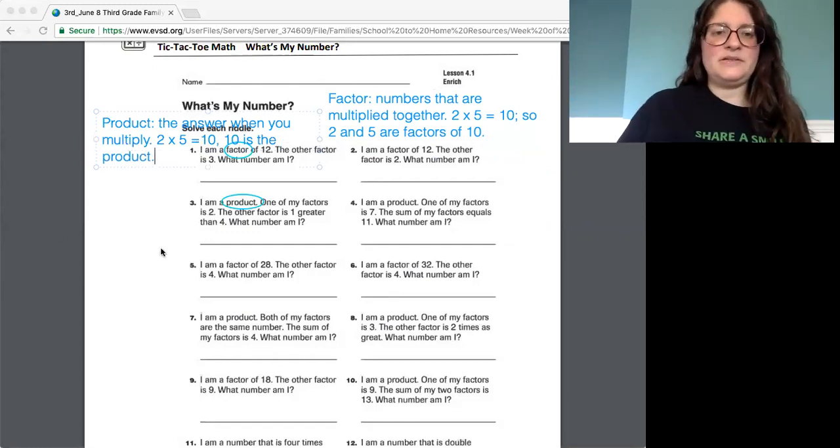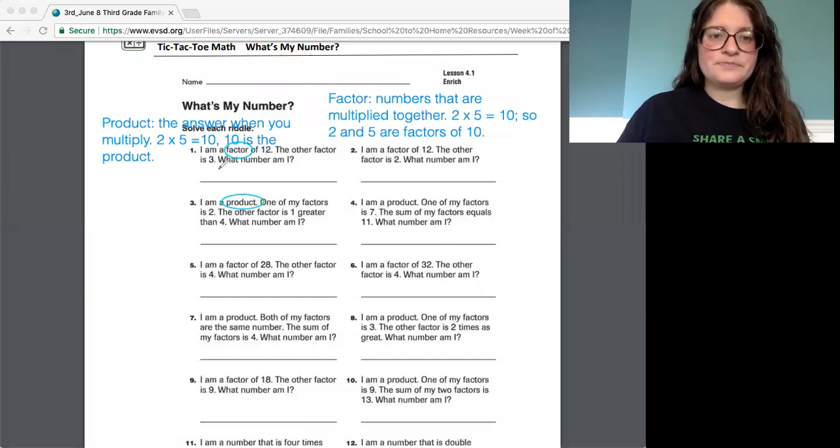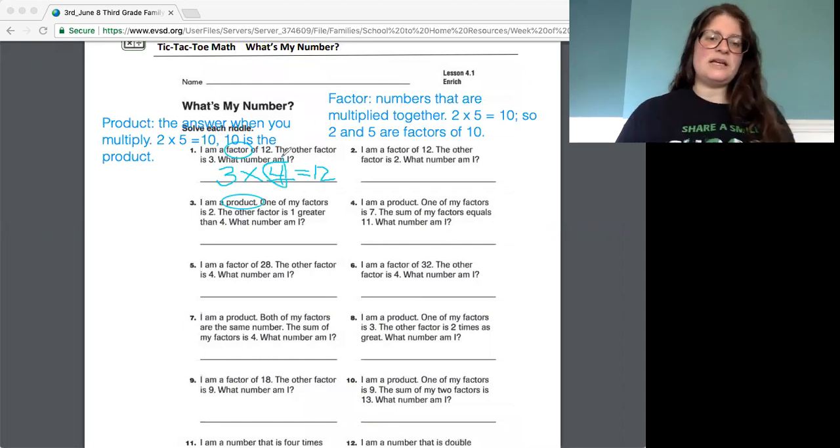Okay so let's get to it here. It says I am a factor of 12. The other factor is 3. What number am I? So I might go ahead and draw. I know that 3 is one factor times something else will give me the product or the answer of 12. And if you know your multiplication facts you know that 3 times 4 makes 12. So 4 is the number they're trying to guess and I might circle it to show.